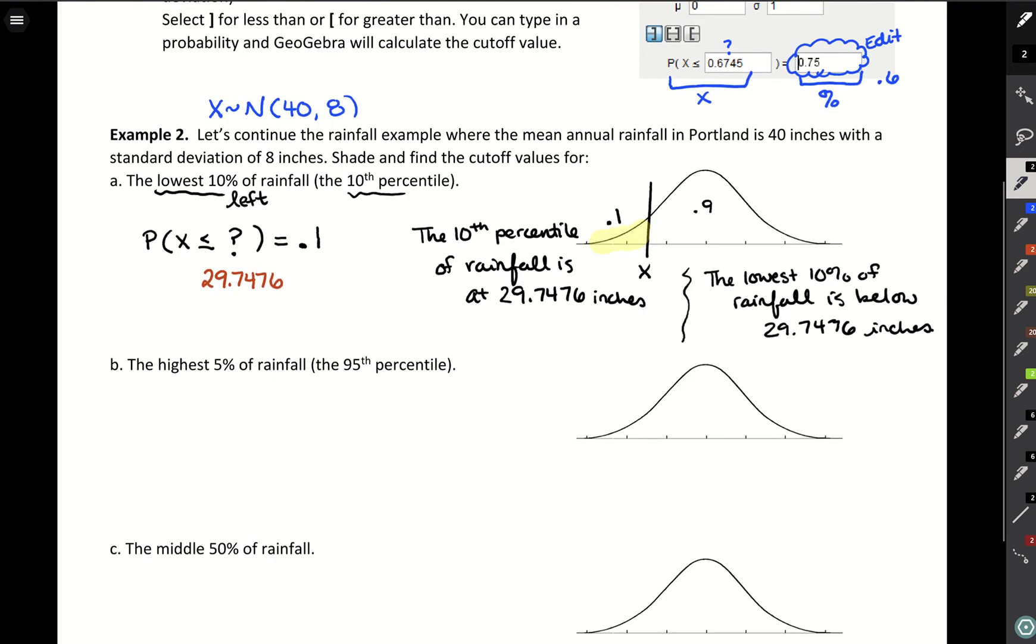All right, this next one is telling us about this highest five percent. Now highest five percent is describing our right hand side. So this is saying on the right hand side of our graph there's this cutting point such that we have this upper five percent, which equates to a lower 95 percent since it has to add up to one. So that's where this is the same as the 95th percentile.